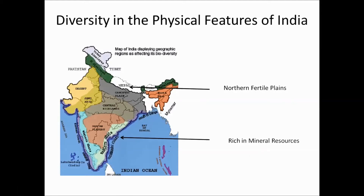The Southern Peninsula is rich in many mineral resources which has enhanced national progress. Many rivers with large volume of water originate in the northern mountainous region, which is also known for a variety of forest resources. So although there is diversity in the physical features, they are all interrelated with one another.